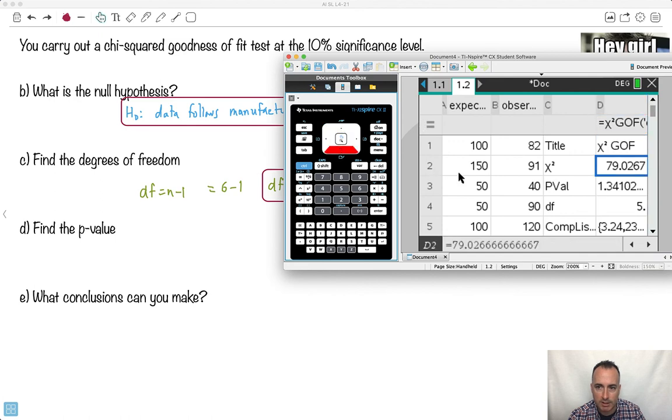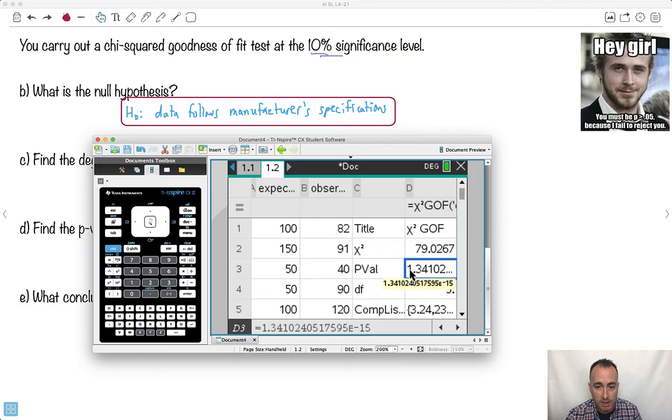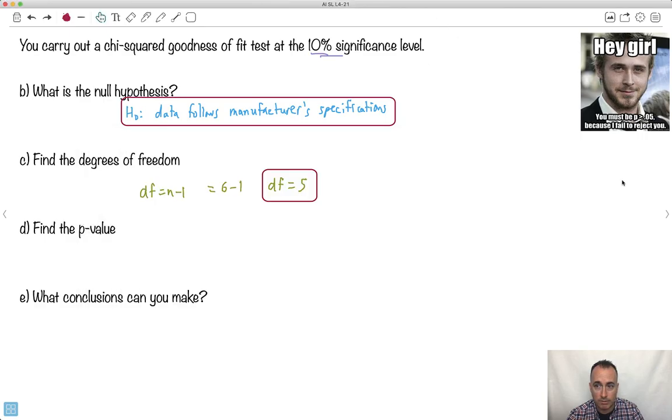So what did it tell me? It told me my chi-squared value was 79. Did I need the chi-squared value? I only need it if I'm going to be looking at a critical value. I don't have that here, so I actually don't care about that. I'm going to care about the p-value. Now notice, it is not 1.34. Watch very carefully. It's actually 1.34 times 10 to the minus 15. That's the important part. So it's actually really, really small. Just watch out for that, because otherwise you might think, oh, it's 1.34.